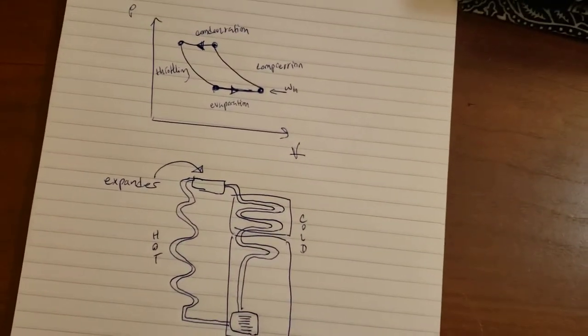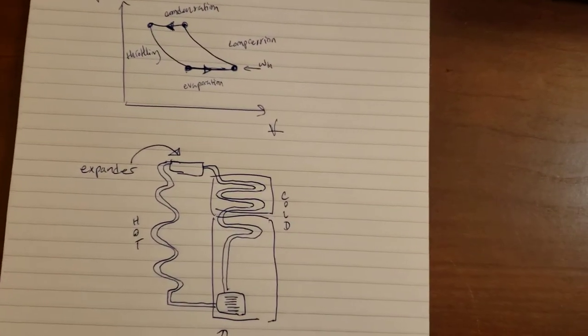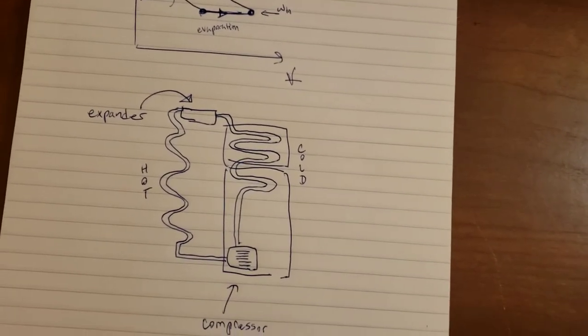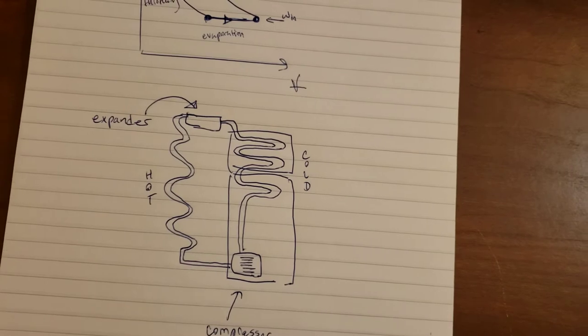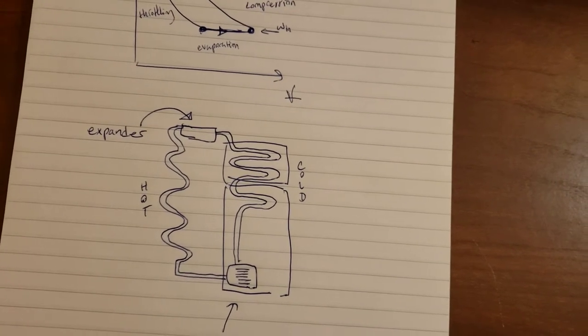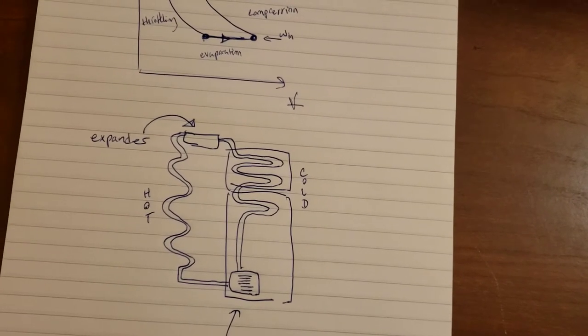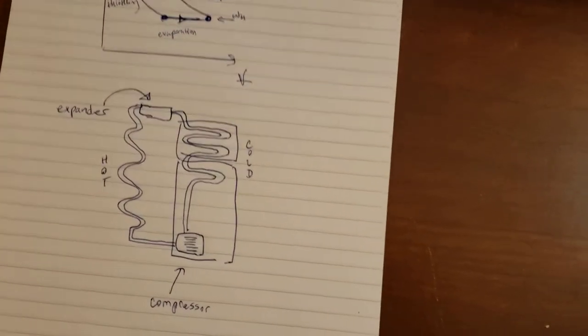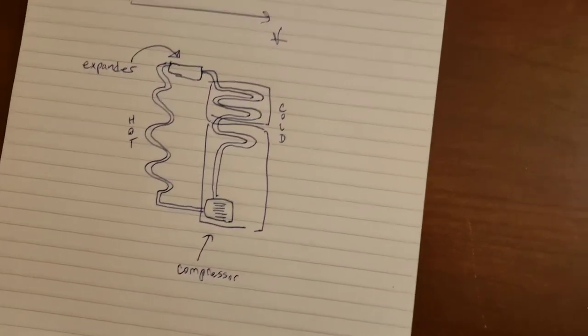So basically in the case of a heat engine, we're trying to take heat energy and convert that into mechanical work. But in the case of a fridge, we're doing the opposite. We're going to inject work into the system and use that to cause a change in temperature. In that way a refrigerator is the reverse of what a heat engine does.